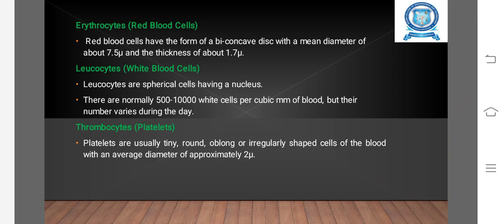Thrombocytes (platelets) are usually tiny, round, oblong, or irregularly shaped cells of the blood with an average diameter of approximately 2 micrometers.